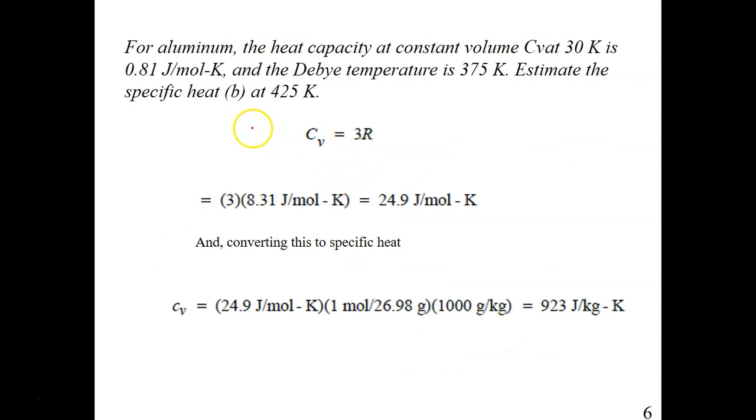This is the solution for the second part. You know that 425 Kelvin is definitely more than the Debye temperature. So you need to use this formula, Cv equals 3R. You calculate 3 times the gas constant. This will be your answer because more than the Debye temperature, the Cv is independent of your temperature. And converting this to specific heat, you get this.